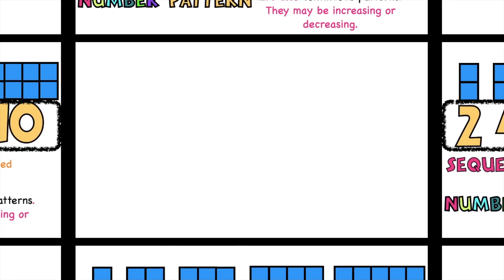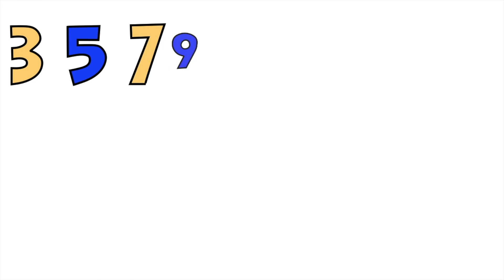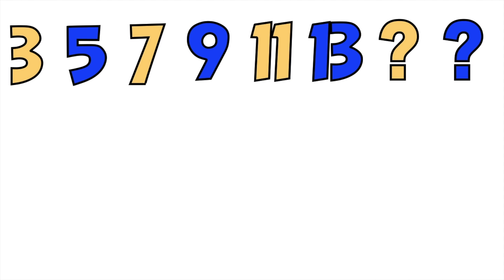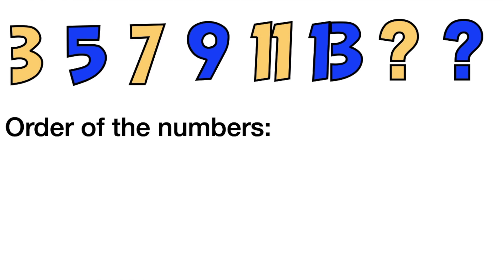So how about if we have this? Three, five, seven, nine, eleven, thirteen. What do you think will be the next two terms? To find the next two terms, we need to identify first the order of the numbers. Is it increasing or decreasing? That's correct, children — the sequence is in increasing order.